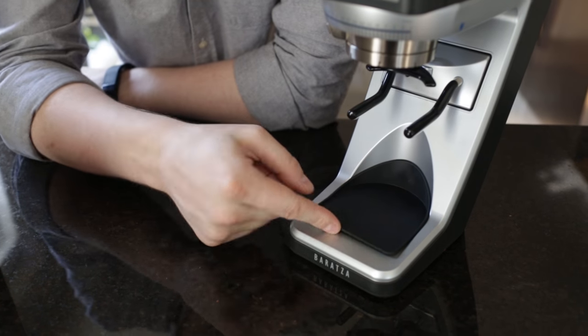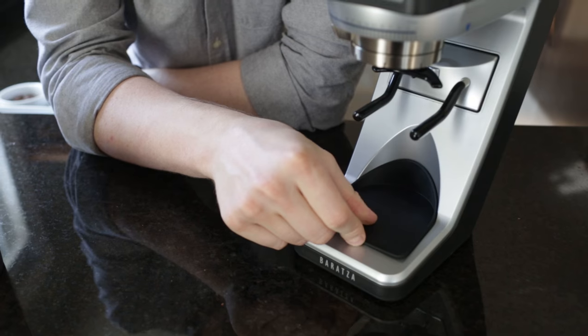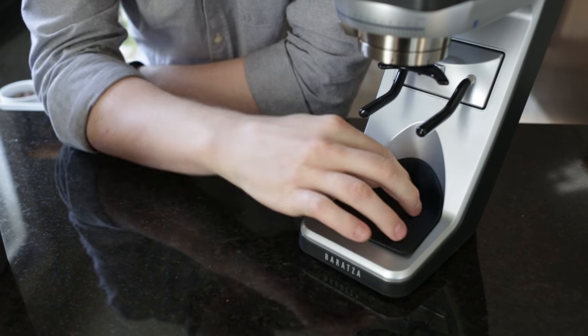Down below we also have a little rubber mat for a grind sketch. Really great, easy to remove, empty it out, rinse it off, dry it off, and you're all set.